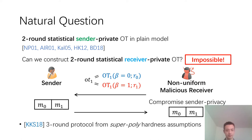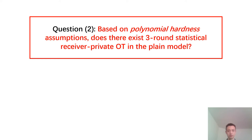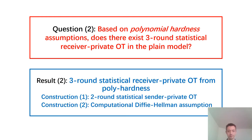Since two rounds is impossible, can we construct a three-round protocol? In the recent work of KKS18, they construct a three-round protocol from super-polynomial hardness assumptions. So our second question is: based on polynomial hardness assumptions, does there exist a three-round statistical receiver-private oblivious transfer in the plain model? Our second result answers this positively. We show two constructions: the first from any two-round statistical sender-private oblivious transfer, and the second based on the computational Diffie-Hellman assumption. We also note that our first construction is also an OT reversal — transforming statistical sender-private OT into statistical receiver-private OT.